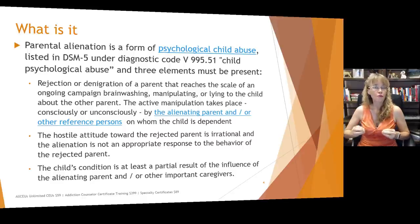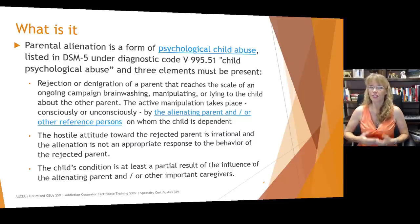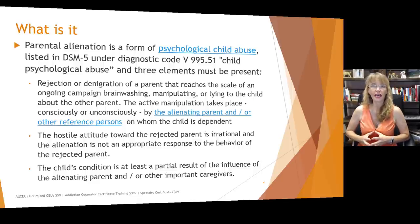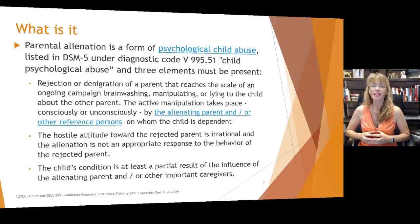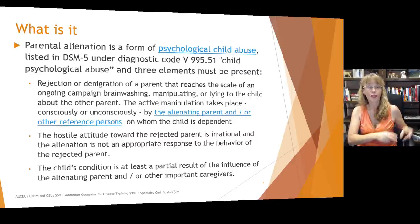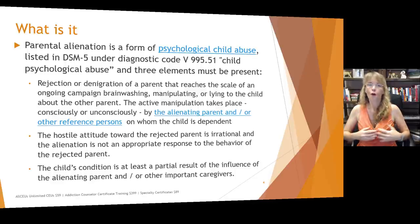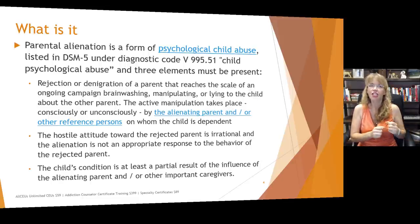The messages need to come from reference persons on whom the child is dependent — persons whom going against could be detrimental to the child. So we're looking at the alienating parent and the alienating parent's family who may be responsible for taking care of the child. The second characteristic is that the hostile attitude toward the rejected parent is irrational, and the alienation is not an appropriate response to the behavior of the rejected parent. The targeted parent really didn't do anything wrong; they may have had conflicts, but they are not a danger to the child.